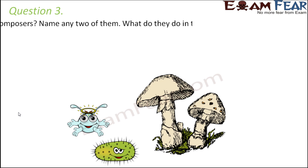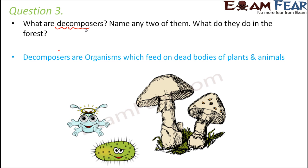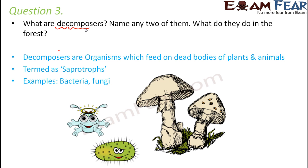Question number 3: What are decomposers? Name any two of them. What do they do in the forest? Decomposers, as the name suggests, decompose — they break down something. These are organisms which feed on dead bodies of plants and animals. They break down the complex organic matter of dead bodies into simple inorganic forms, which form the humus in the top layer of soil and therefore improve the fertility of the soil. Examples of decomposers are bacteria and fungi. They are also known as saprotrophs because they feed on dead and decaying matter — 'sapro' means dead and decaying matter.